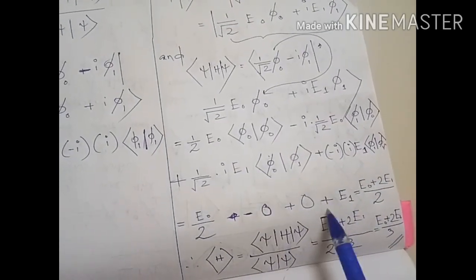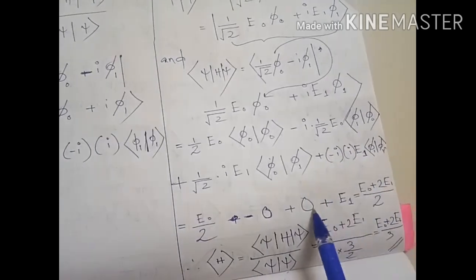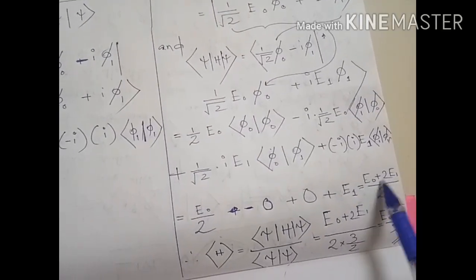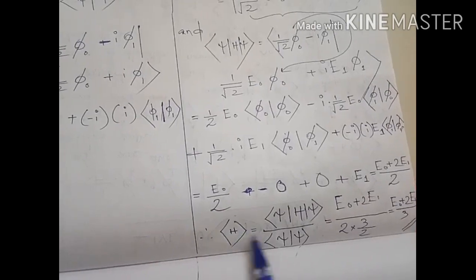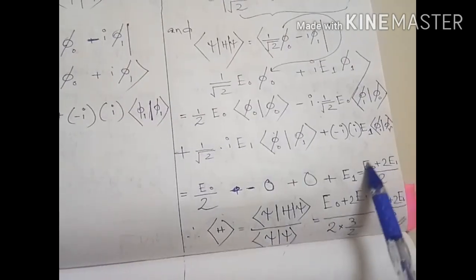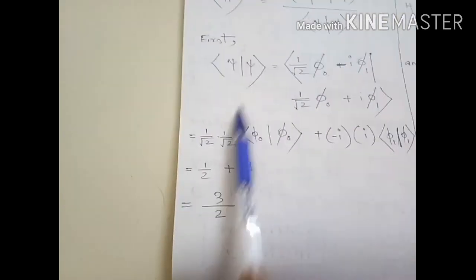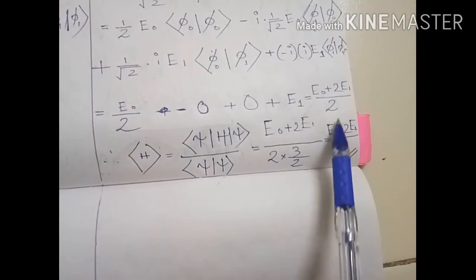We are left with (1/2)E₀ from the first term, and -i × i = +1, so the last term gives (1/2)E₁. Thus ⟨ψ|H|ψ⟩ = (E₀ + 2E₁)/2. The expectation value is this divided by ⟨ψ|ψ⟩ = 3/2, giving the final answer ⟨H⟩ = (E₀ + 2E₁)/3.